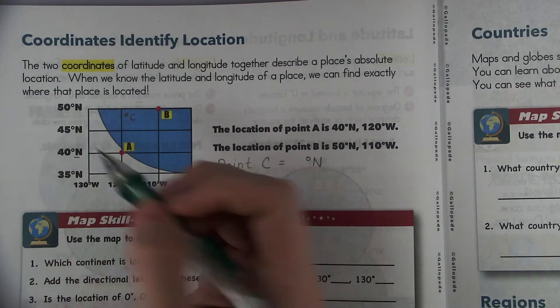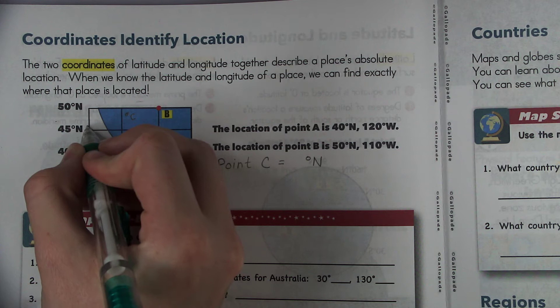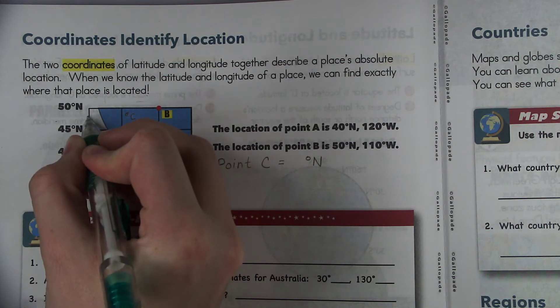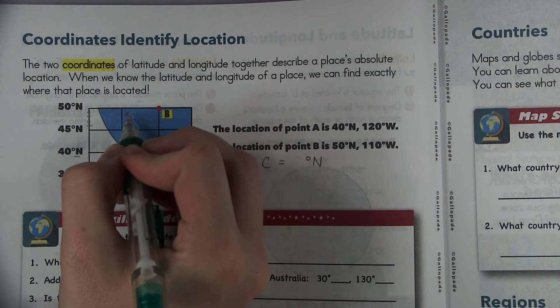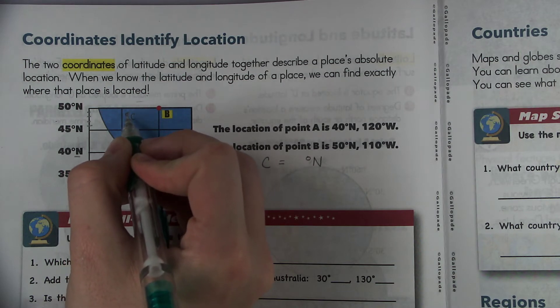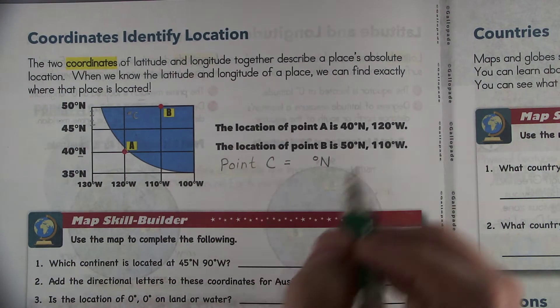So if I look it's between 45 and 50. So if it's between 45 and 50 I would say it would be, this would be like 46, 47, 48, 49. I would say it's about at 48, you could say 49, it wouldn't really matter, it's close enough.